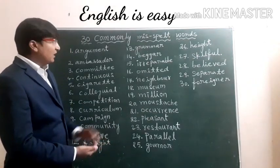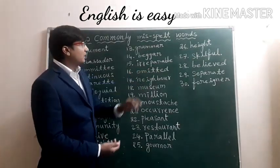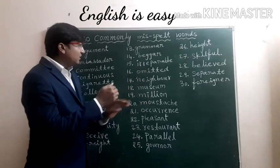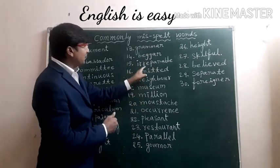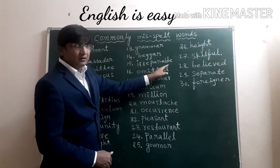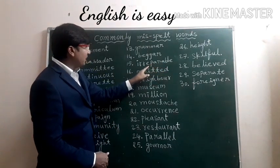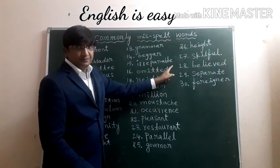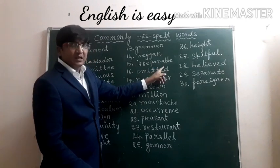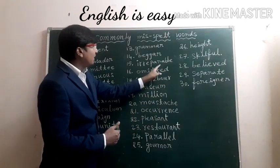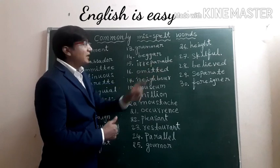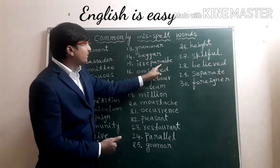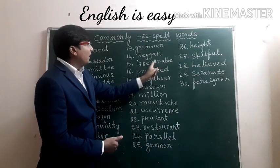Fifteenth one: Irreparable. Pay attention here. If we take separately the word 'repairable,' the spelling is R-E-P-A-I-R-A-B-L-E. But if it is 'irreparable,' there is no I in the middle. If you want, you can check in your dictionaries — irreparable, there is no I here.